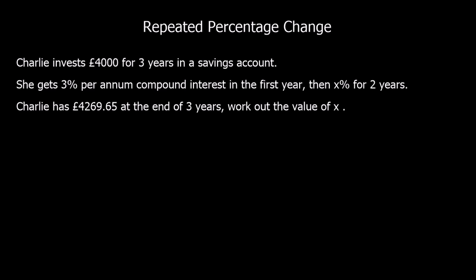And one more question. So Charlie invests 4,000 pounds for three years in a savings account. She gets three percent per annum compound interest in the first year and then X percent for two more years. Charlie has £4,269.65 at the end of three years. Work out the value of X.